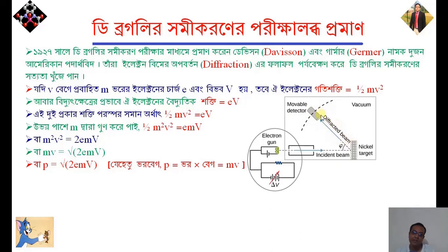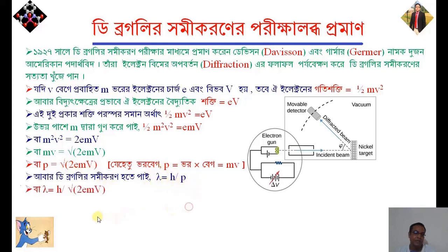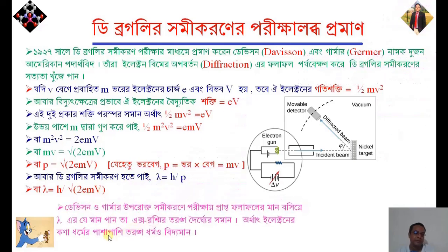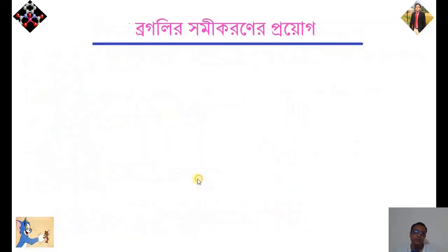This is a diffracted beam, which is a diffracted beam. Now, if we have de Broglie, we have de Broglie. We have de Broglie, which is a class.